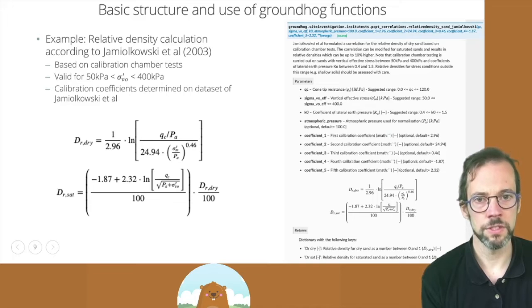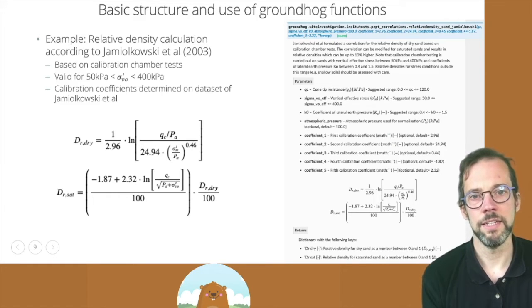So the vertical effective stress, for instance, did not go lower than 50 kPa or higher than 400 kPa. So Groundhog will actually validate the vertical effective stress that you give to it, which needs to be in kPa, and it will check whether it is within that range.